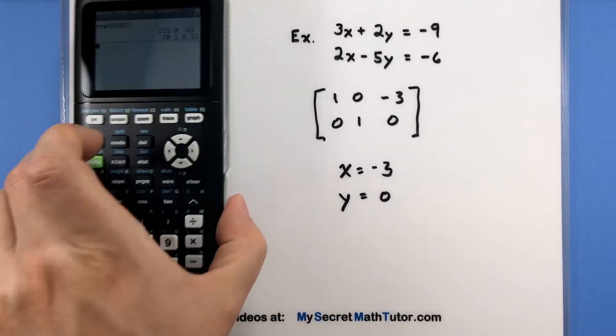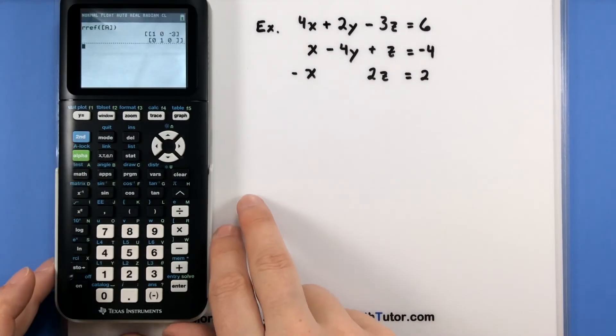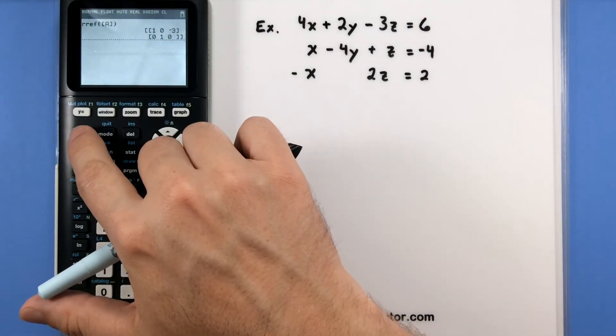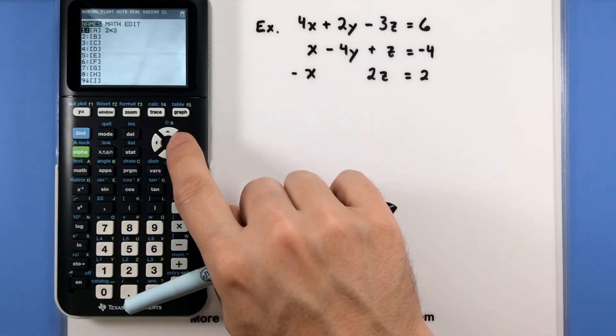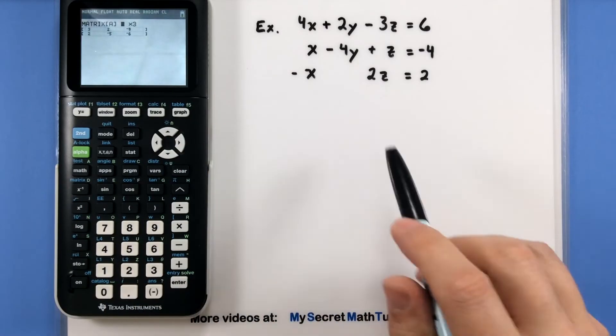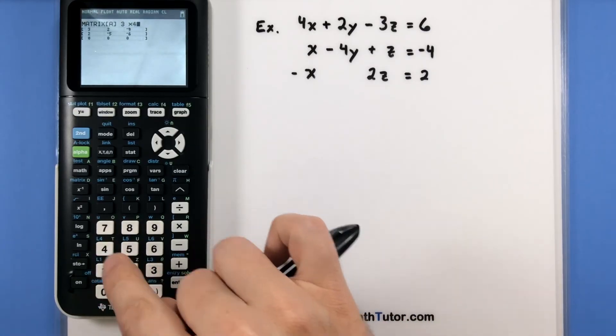The real power of this is when your systems start to get a little bit larger. So we'll do this one more time with a 3x4 and see how it really is the same process. Quickly. Second matrix. Let's go ahead and go to our edit screen. Enter. This happens to be a 3x4 so we'll do the dimensions. 3, enter, 4, enter.